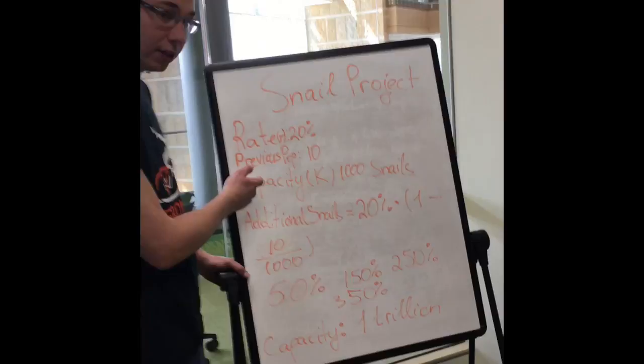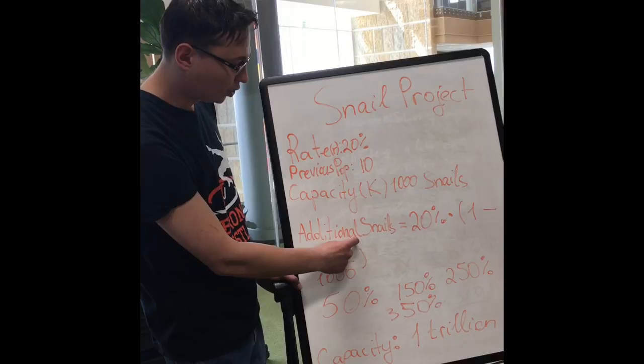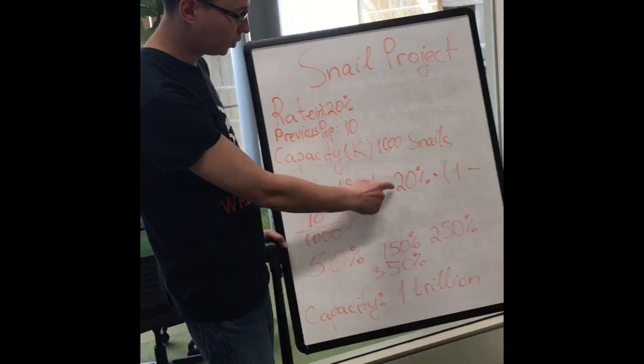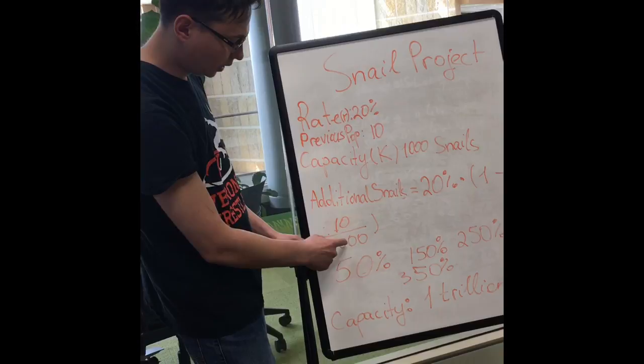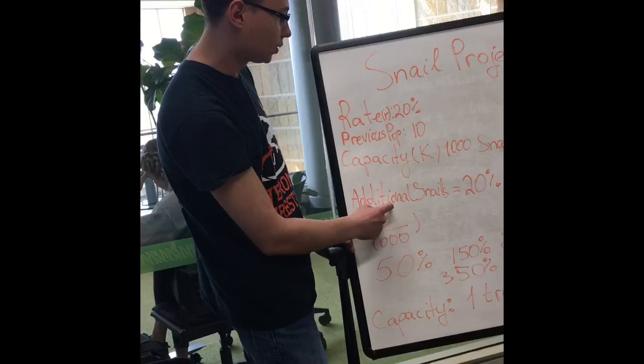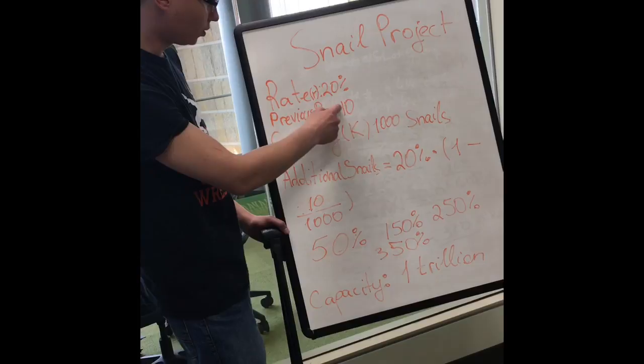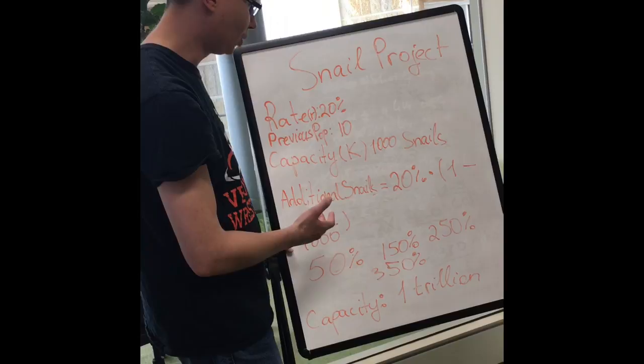So what we do is we take these starting variables and we plug them into this formula, and the formula is to get additional snails. To calculate number of additional snails, we take the rate 20%, that's going to be 0.2, then you do times 1 minus 10 divided by a capacity of 1,000. So we get our additional snails, and since we already had the 10 previous snails, we're going to add the additional snails onto those 10, and that's how we get our week one.